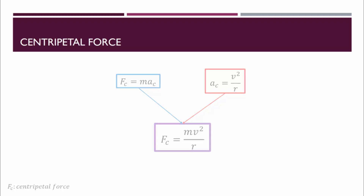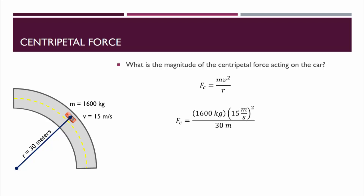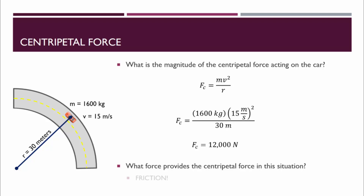Let's give this a shot. If the car in our previous example had a mass of 1600 kilograms, we could figure out the centripetal force acting on the car. FC equals mv squared over r, and we can substitute in our mass, velocity, and radius to find that the centripetal force acting on this car is 12,000 Newtons. It's very important to also answer this question: what force is providing the centripetal force in this situation — that is, what force that we could draw on a free body diagram is keeping this car traveling in a circular path? In this case, it's friction.